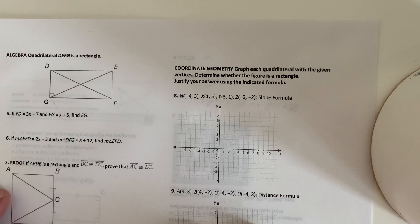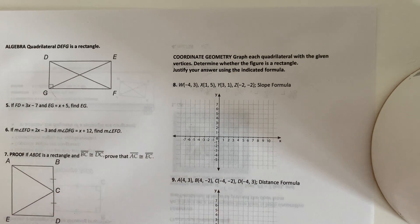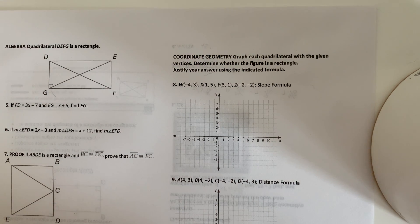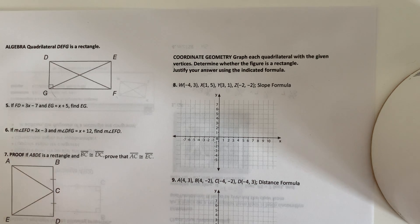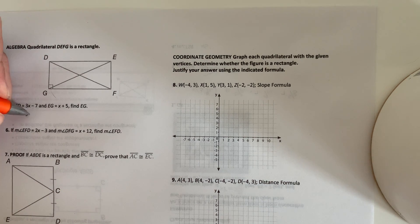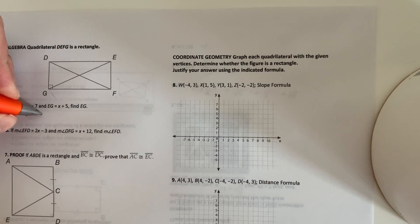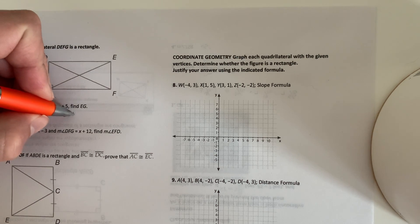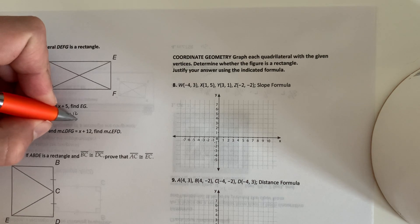So now we've got a rectangle again for 5. FD is 3X minus 7. FD is the diagonal. And then EG is the other diagonal. And X plus 5, we know the diagonals are congruent. So we can just do 3X minus 7 equals X plus 5. Subtract X from both sides. I get 2X minus 7 equals 5. Add 7 to both sides. I get 2X equals 12. So X equals 6.